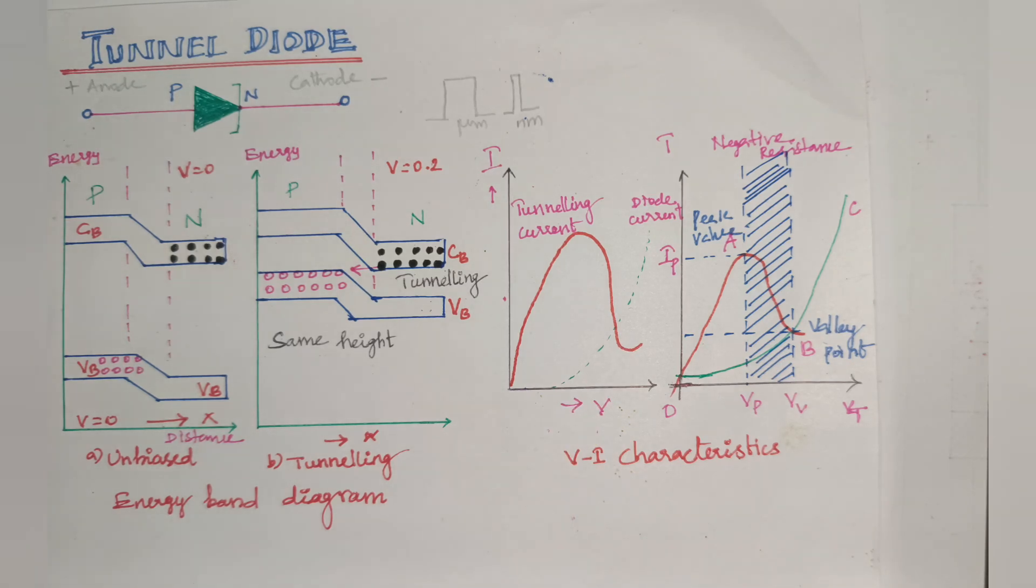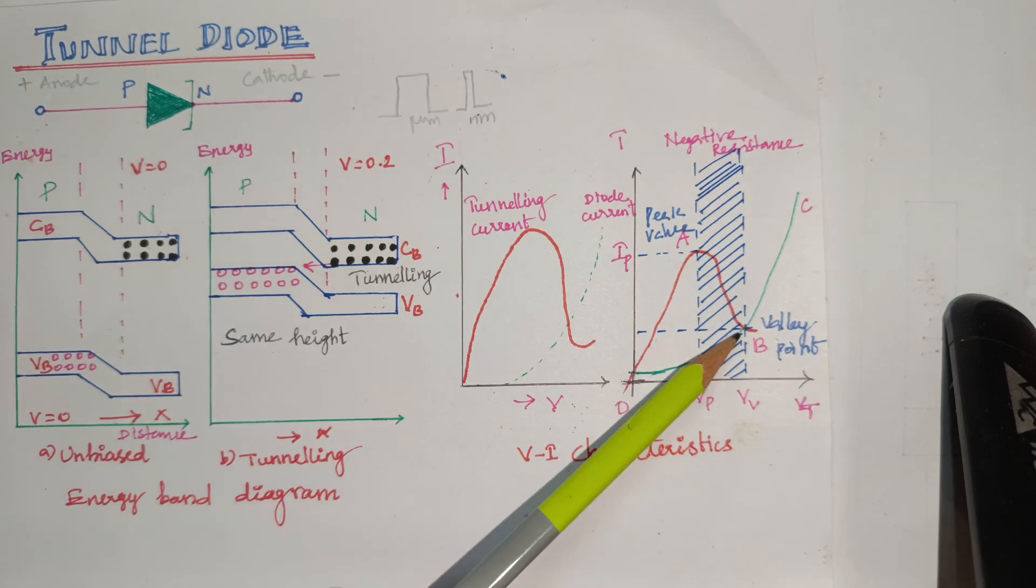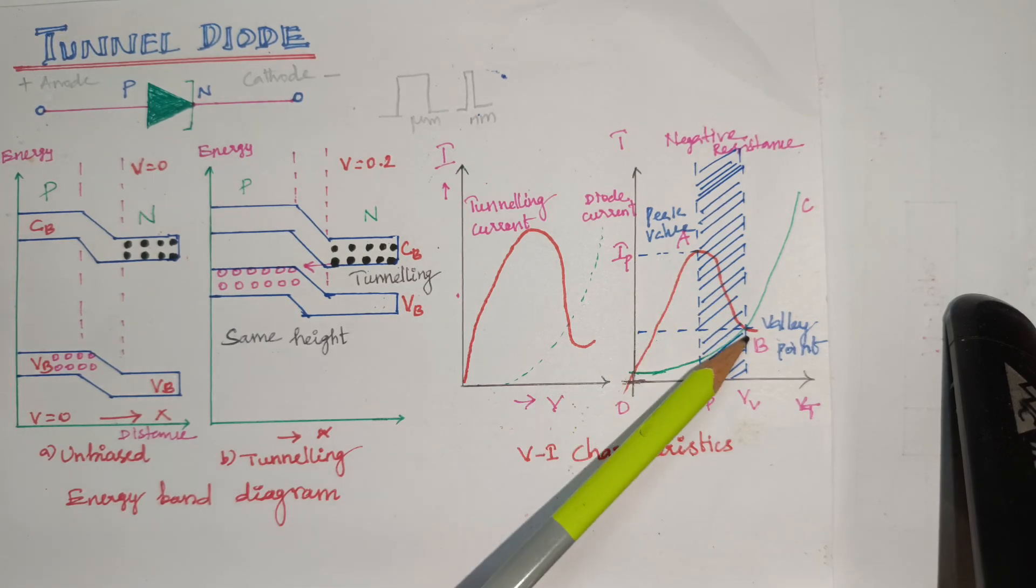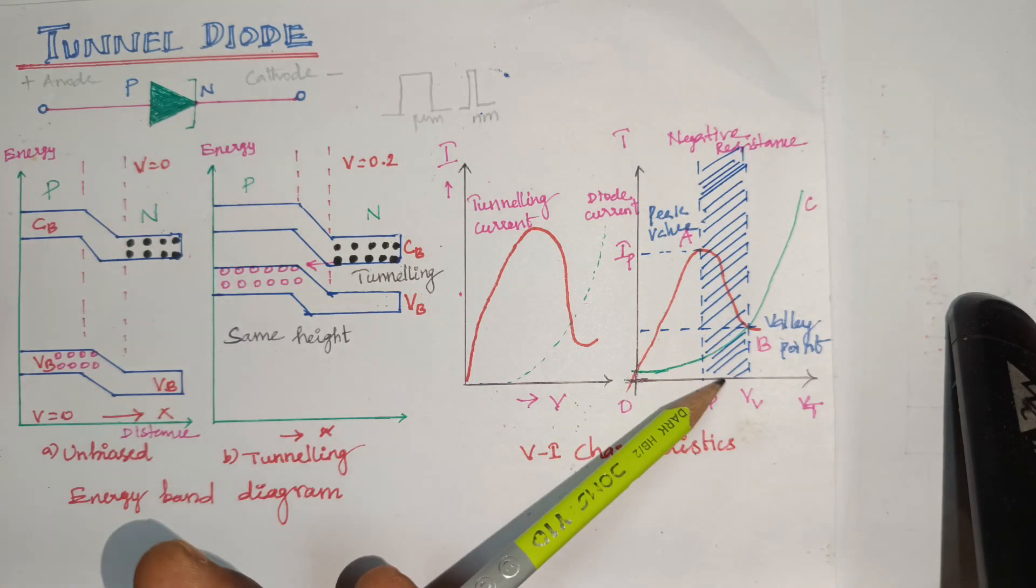Between the peak point A and valley point B, the current decreases with increasing voltage. This means the tunnel diode shows negative resistance.